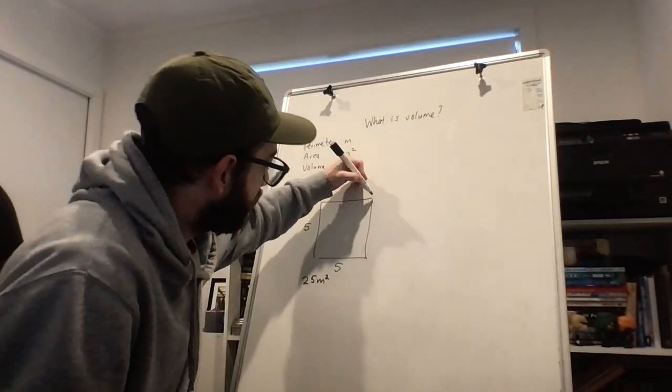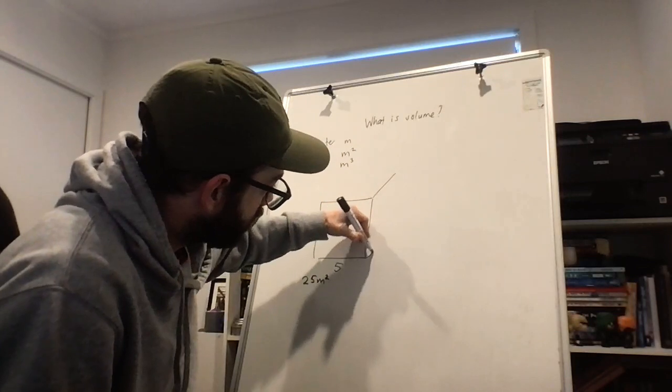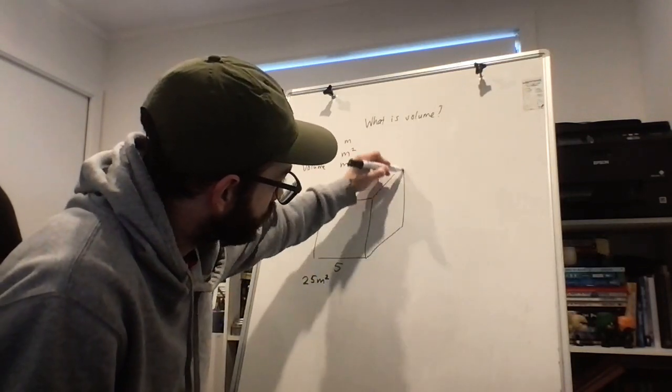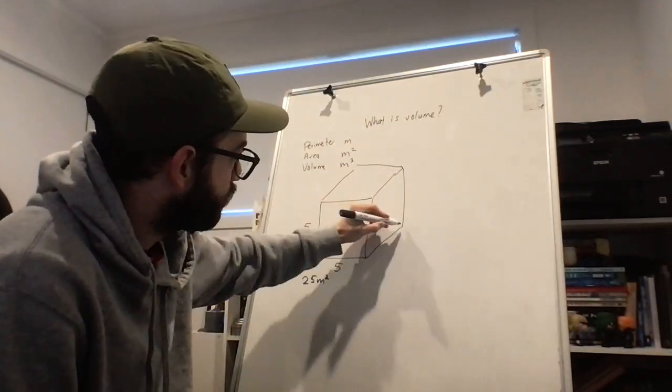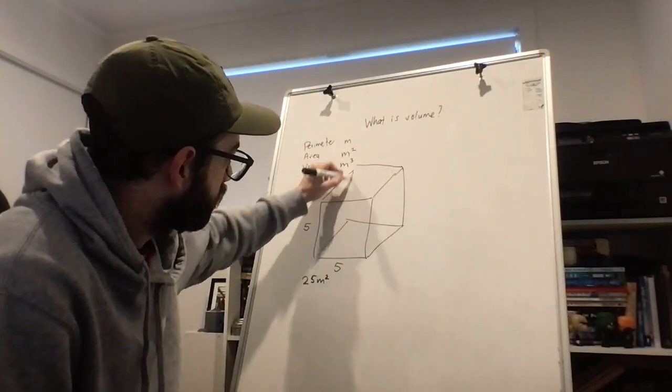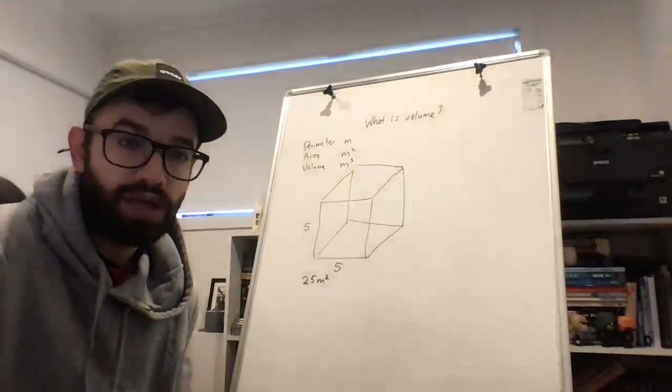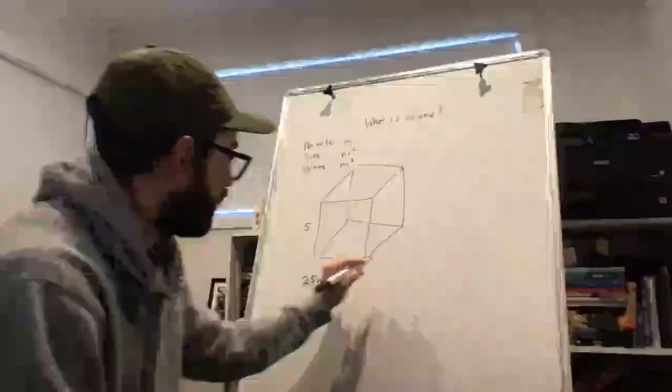Volume is looking at three-dimensional shapes. So it's imagining that this shape was actually a cube instead of a square. And in that case,